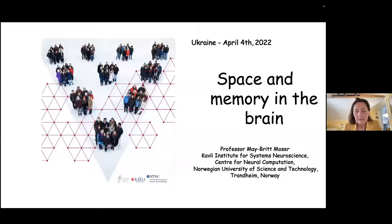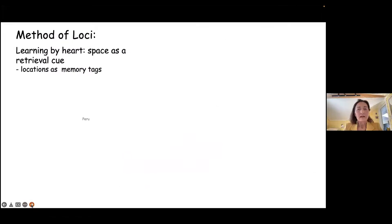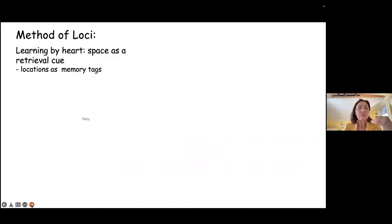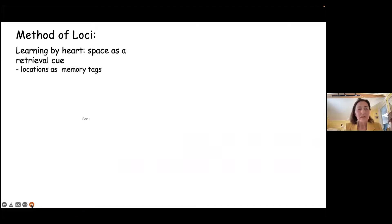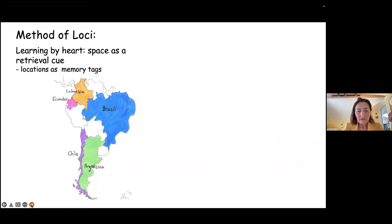You have probably all heard about the method of Loci. That is a very useful method if you want to remember boring information when you have to learn something by heart. You can use space as a retrieval cue, and I showed this also in my Nobel lecture in Stockholm. Here is an example of such a method of Loci application.